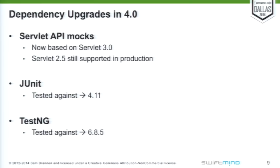Some of the dependencies we also upgraded — the minimum versions that we support. For example, the Servlet API mocks — things like MockHttpServletRequest, MockHttpSession — were previously based on Servlet 2.5, and now they're based on Servlet 3.0. So that means your tests won't compile and run with the Spring MVC test framework unless you have Servlet 3.0 on the class path. However, Servlet 2.5 is still supported in production. So you can still mix and match — running Spring 4.0 and 4.1 with Servlet 3.0 on the class path for tests, but deploying to 2.5 as long as you're not using any Servlet 3.0 features in your application.